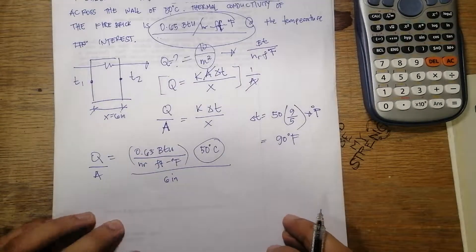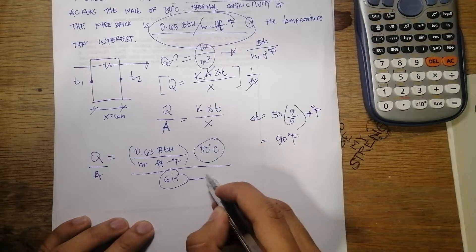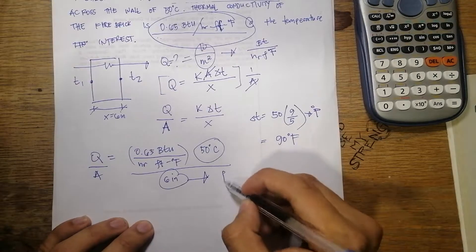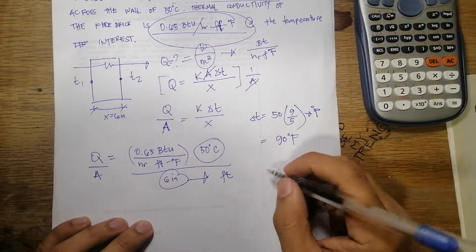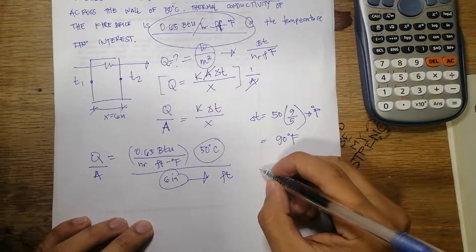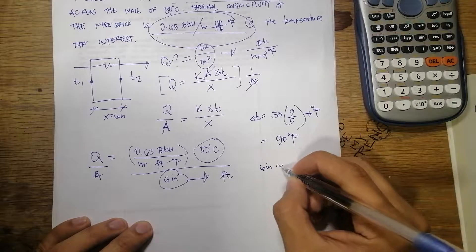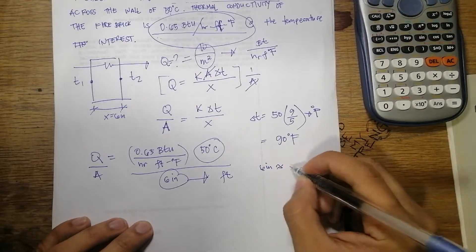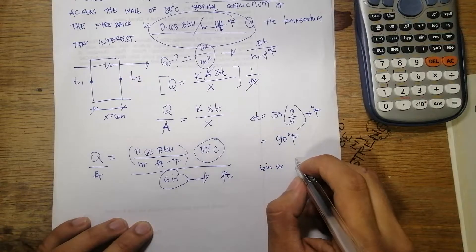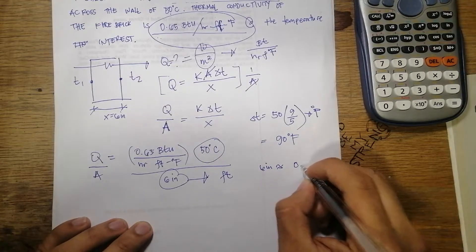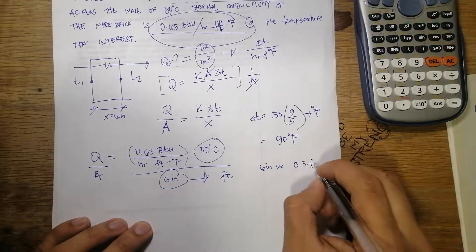Next, we convert the thickness into feet. Six inches is equal to 0.5 feet, which is half of a foot.